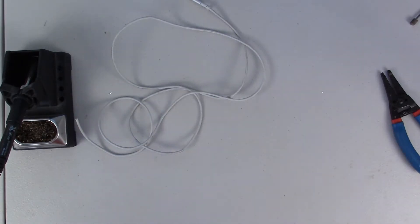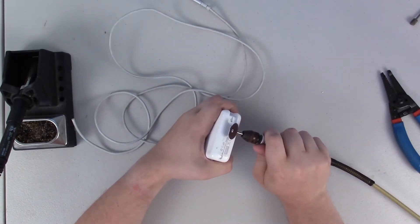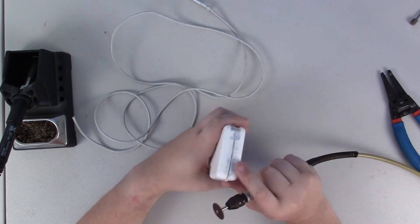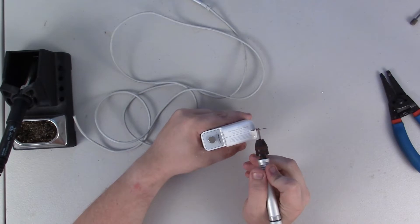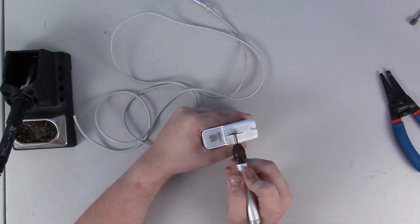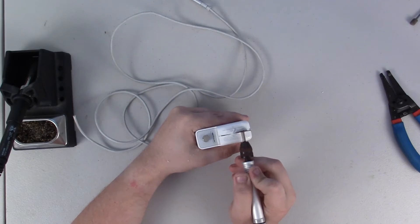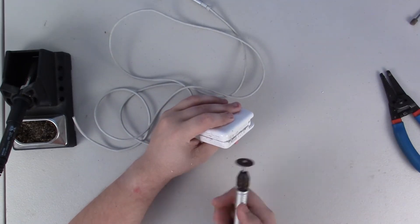The first thing you want to do is basically Dremel open the case. This is one of the parts where you want to be the most careful because you really want to make sure that you don't hit any of the electronics inside.